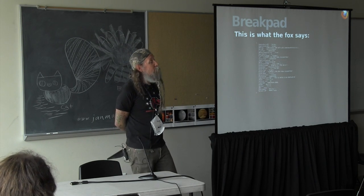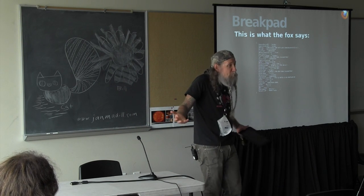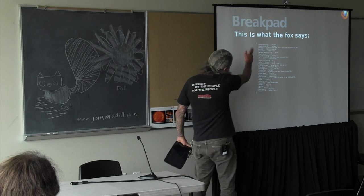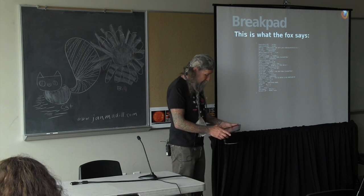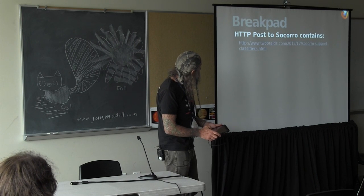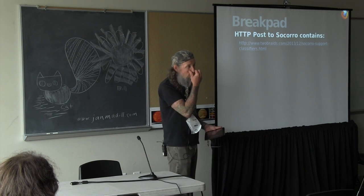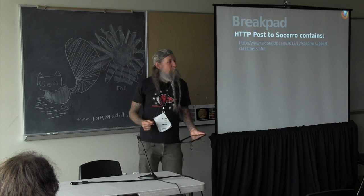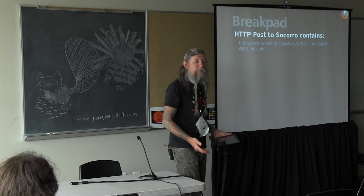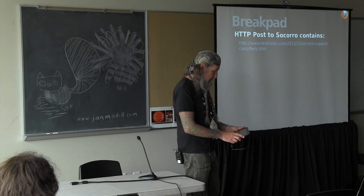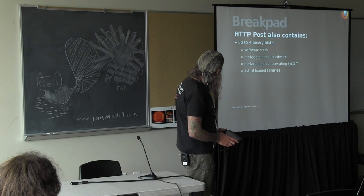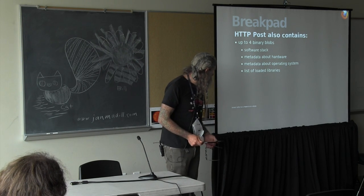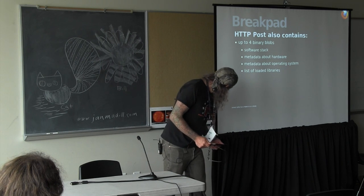So this is what the fox says when it's crashing — who knew it was JSON? This is the full information, plus there are one to four binary blobs. Up to four binary blobs: it has stack information, meta information about the hardware, and a list of loaded libraries.